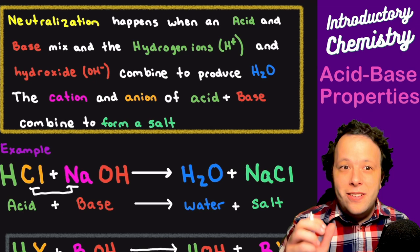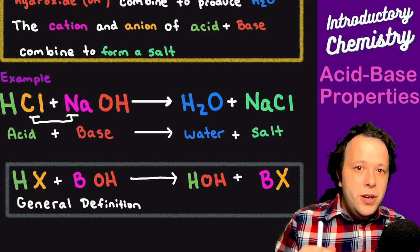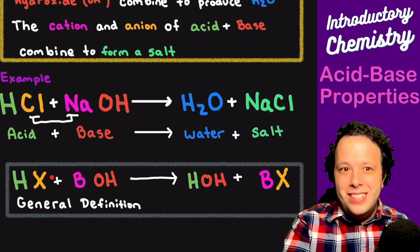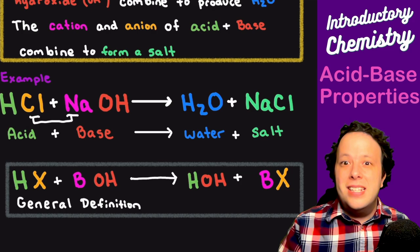We can follow the general definition for acids and bases where we put an H out front to represent an acid. The X represents the anion or negative ion connected to it, and that reacts with a base that has a hydroxide component. We trade the different pieces to make water and salt as a product. This is one of the major types of reactions in acid-base chemistry.